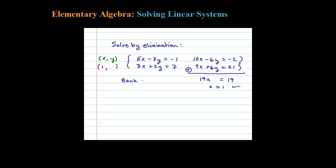When we back substitute, you could back substitute into any one of these four equations. I'll take the second equation and plug in x = 1, so 3 times x plus 2y equals 7. Doesn't matter which equation you choose, you'll get the same answer. So 3 plus 2y equals 7.